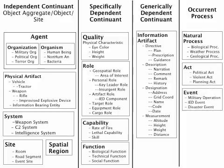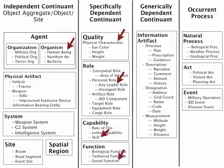To show how several BFO-conformant ontologies can be related to each other, consider the following example. A human being in an agent ontology will have physical characteristics and can be in numerous roles, such as a key leader, an engineer, a financier, etc. They will also have certain skills and social functions. Any human being in a key leader role will participate in social and political acts or processes. Furthermore, all of this can be captured, described, designated, measured, or expressed by various information artifacts.